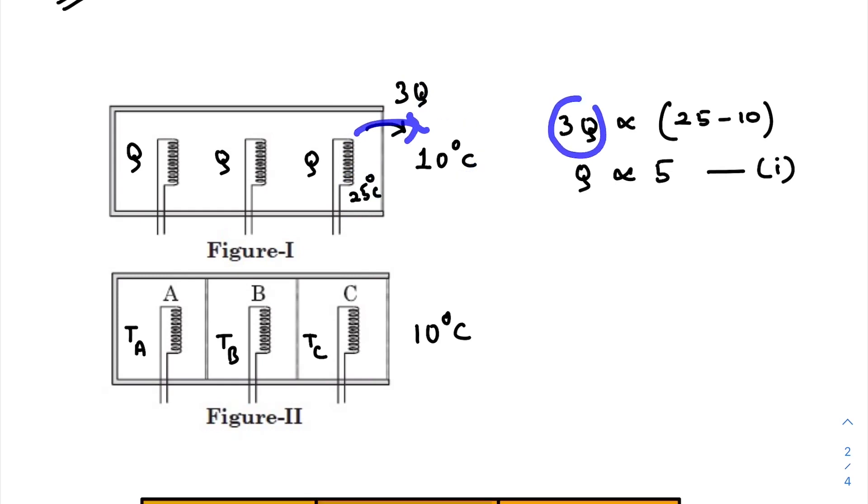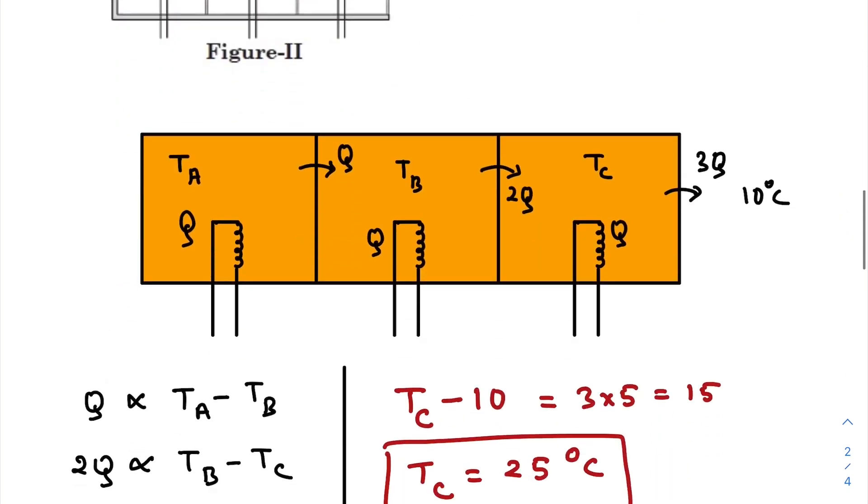So heat radiated or heat coming out is directly proportional to the temperature difference. So that gives you Q, that's the energy radiated by each heater, is directly proportional to 5. Of course there should be some proportionality constant, I won't take that one for the time being.